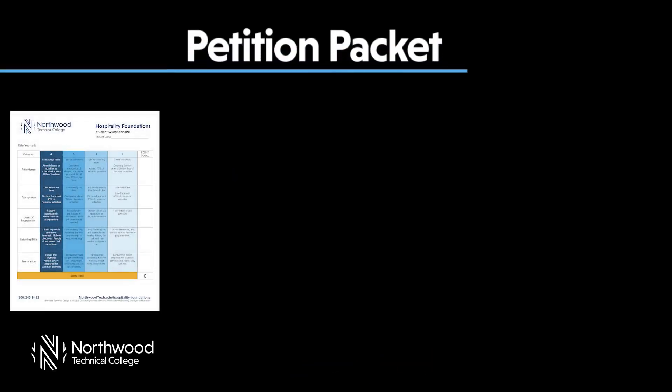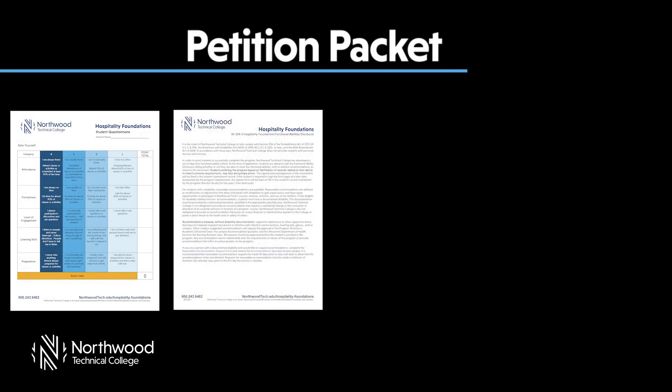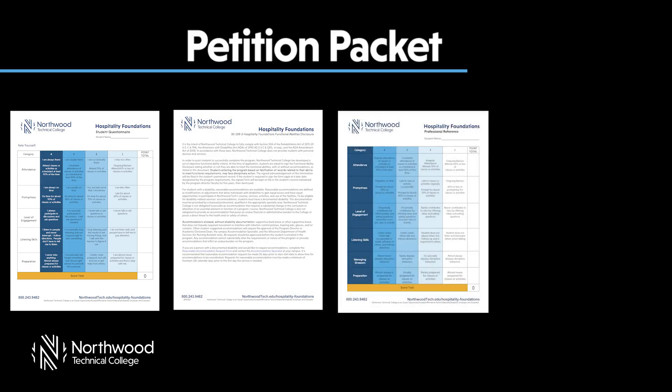The petition packet includes a student questionnaire, which is to gain insight and information for goal planning. A functional abilities disclosure to inform and create a reasonable accommodation plan. Professional references to gain more information from those who know the student best, which helps create student goals and focus areas.